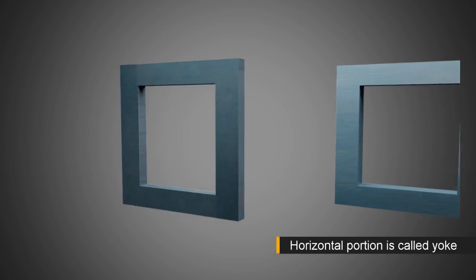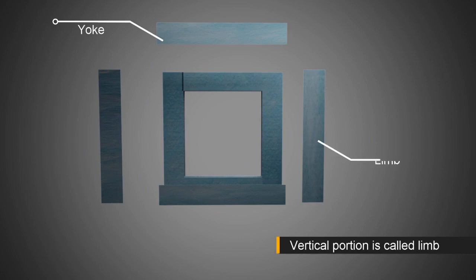In this core, the horizontal portion is called yoke and the vertical portion is called limb.